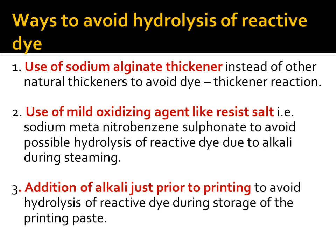When doing color matching, a small quantity of paste except alkali will be taken; the required amount of alkali is added to that sample and color matching is checked. Once the color matching is approved and the program is given a green signal for production, then into the entire paste we can add alkali and start printing. This is how we can avoid hydrolysis of the reactive dye — these are the three ways.